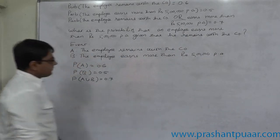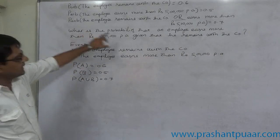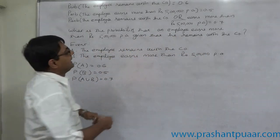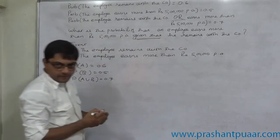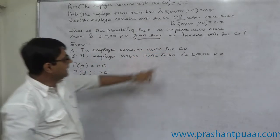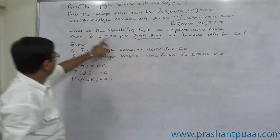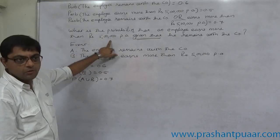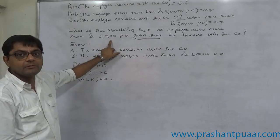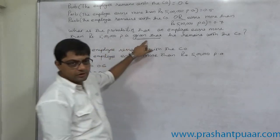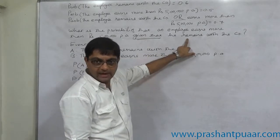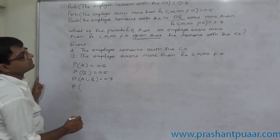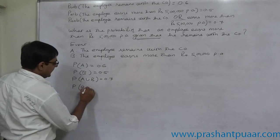Now, what is the main question? What is the probability that an employee earns more than Rs.5 lakh per annum, given that he remains with the company? That means, what is the probability of B given that A has happened? So we require to calculate P(B|A).